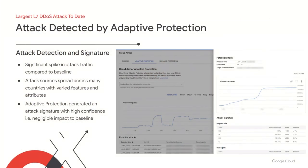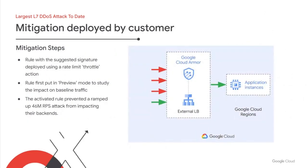In the attack that Emil just mentioned, adaptive protection detected an initial spike in the volume of attack traffic compared to the baseline. Although the attack sources are spread across many countries and contain varied L7 attributes, adaptive protection was able to generate an attack signature with high confidence, which implies negligible impact to baseline traffic. Cloud Armor then alerted the customer with the attack details and suggested a rule to deploy. The customer deployed the suggested mitigation as a rule with a rate limit action, first put in preview mode to assess its impact. Once clear, the customer activated the rule, which prevented the much larger attack of 46 million requests per second from impacting their backends. I'm going to talk about the threats that cloud services face in the form of DDoS and web risk, and then provide guidance on mitigation using Cloud Armor.